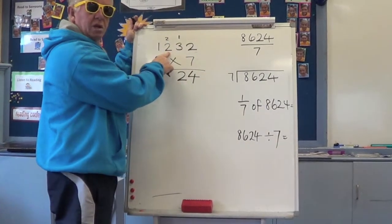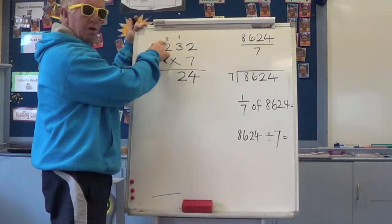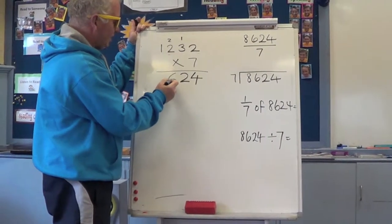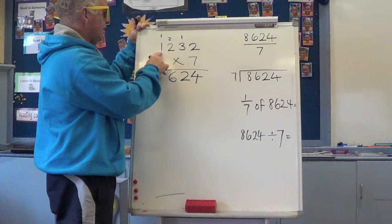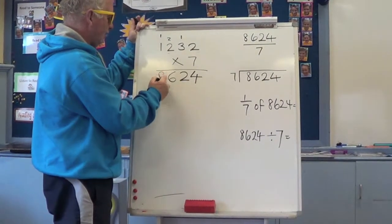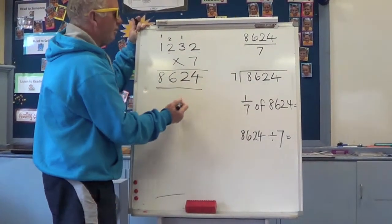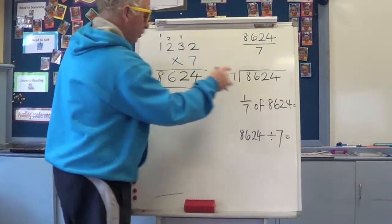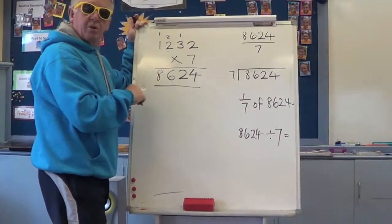7 times 200 is 1,400. Plus 200 is 1,600. That's 600 and 1,000. 7 times 1,000 is 7, plus 1 is 8. 8,624, and that's the number we started with there. So that proves that we've got the answer right.